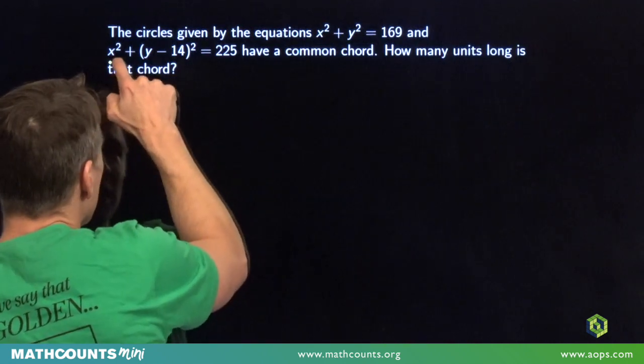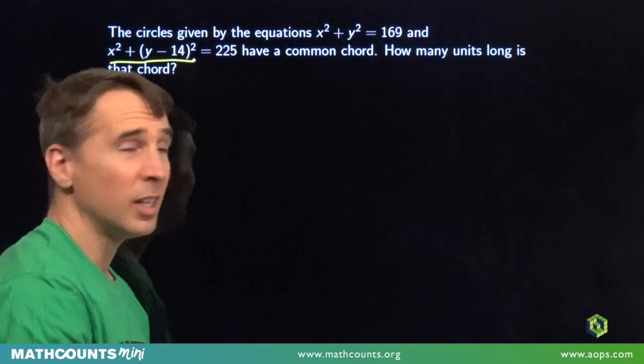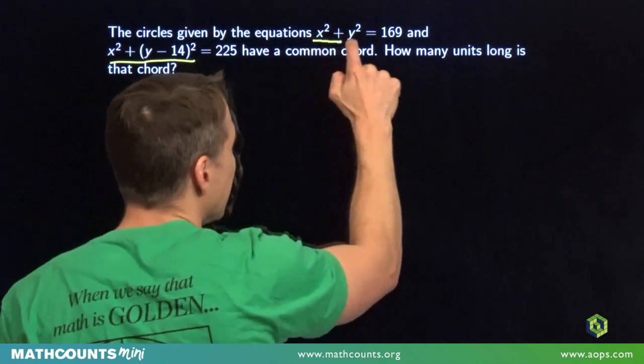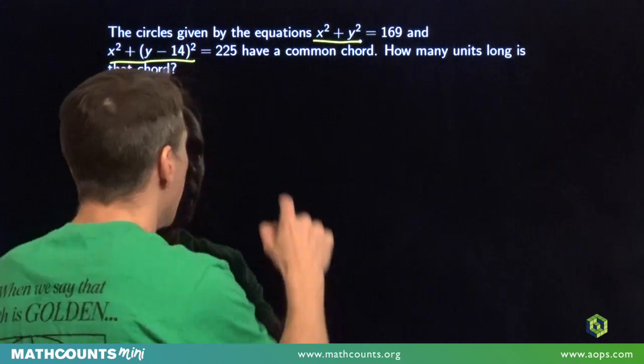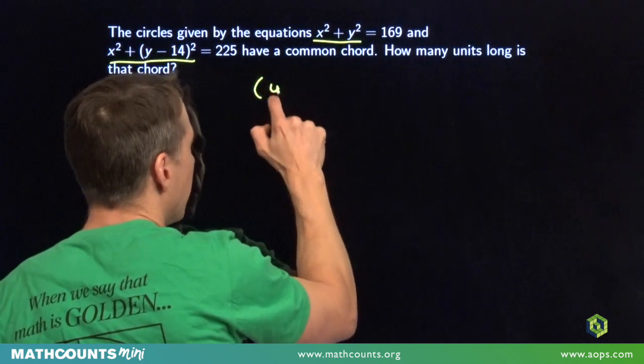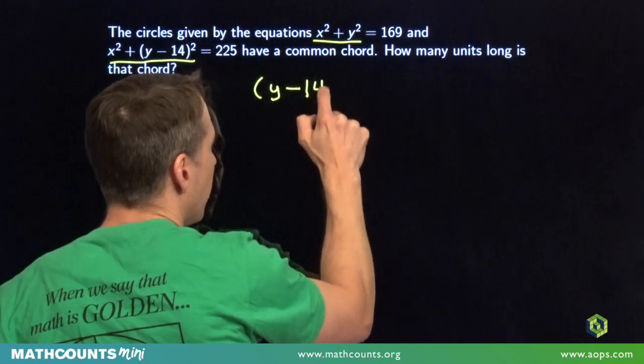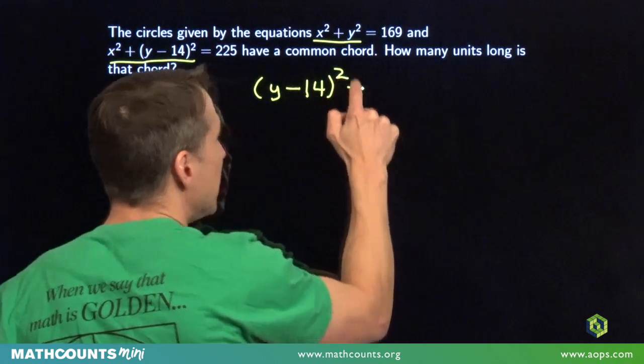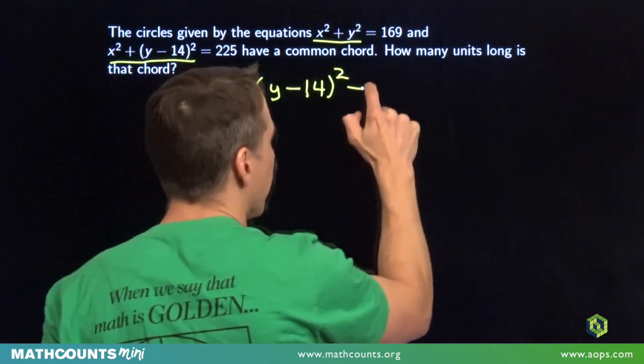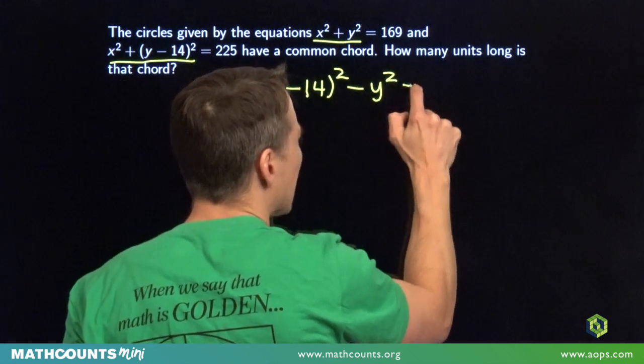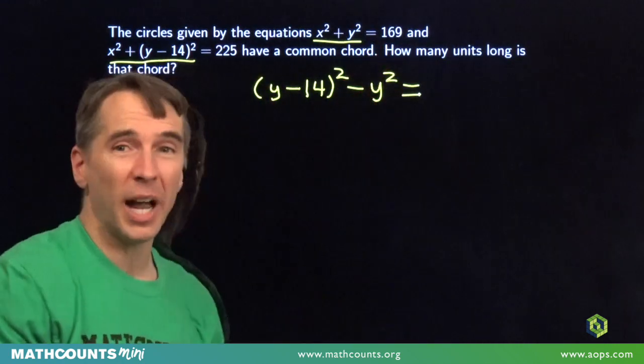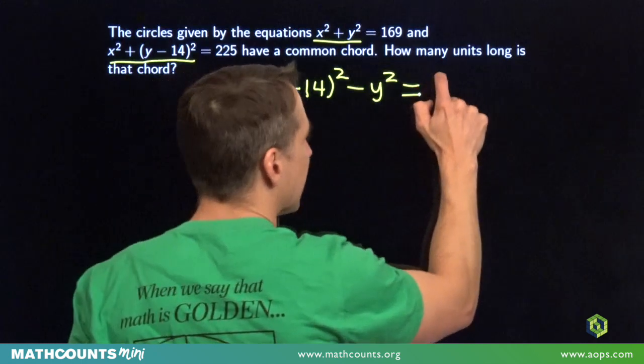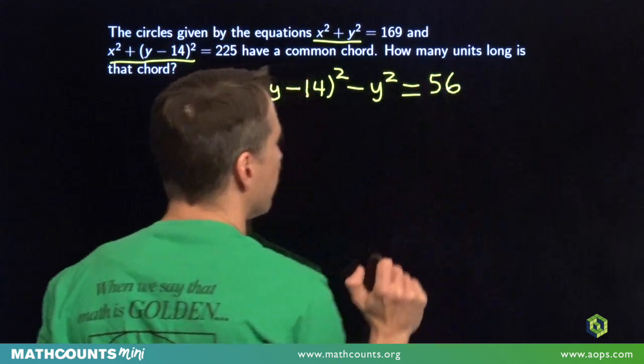That's going to work. I'm going to start on the left-hand side. I'm going to start with this right here, and I'm going to subtract this right here. The x squareds, they're going to cancel, and I'll be left with that square of y minus 14 minus that y squared right there. The x squared's canceled out. Now over on the right-hand side, 225 minus 169, that gives us 56.